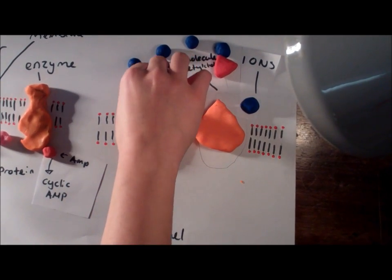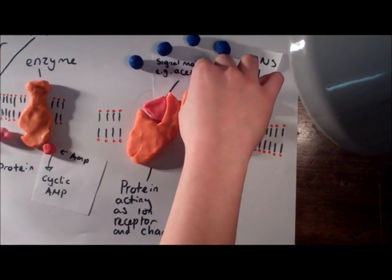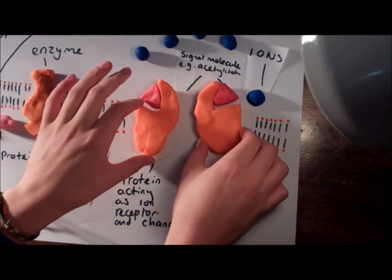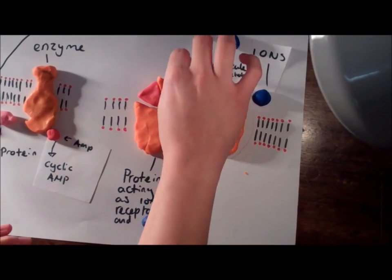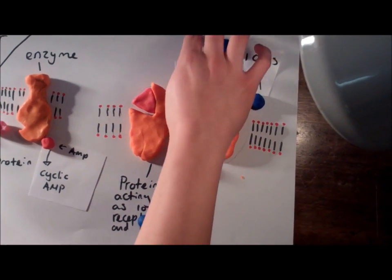When the chemical attaches to the receptor, it makes the channel open to let the ions into the cell. An example of this is an insulin receptor.